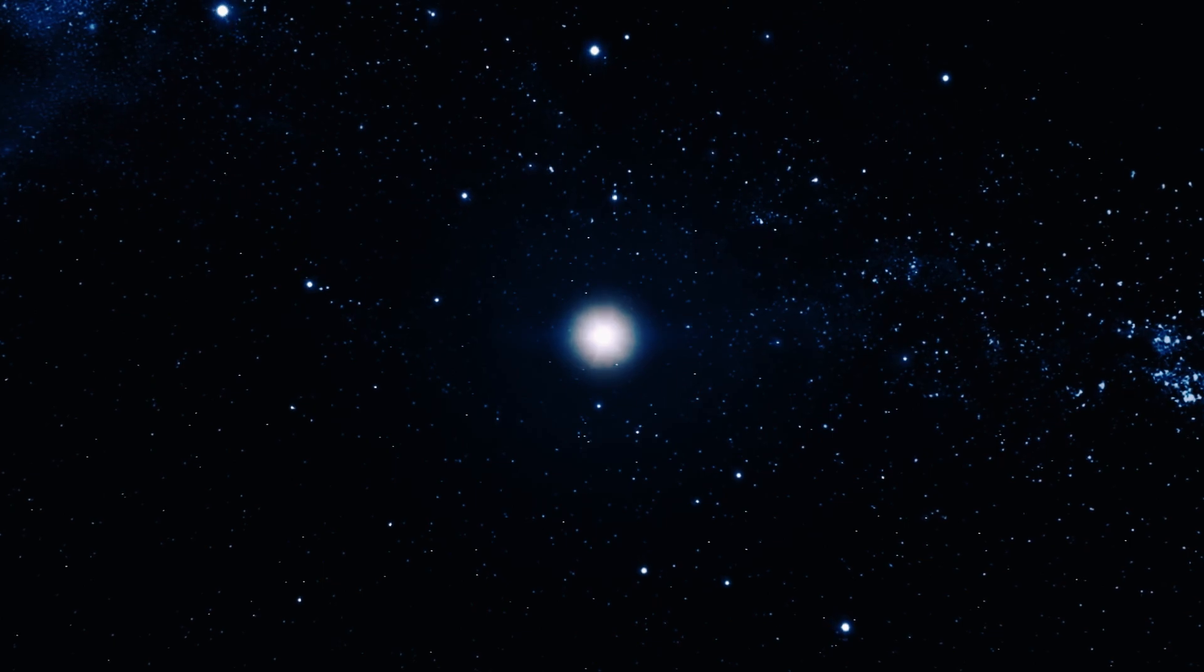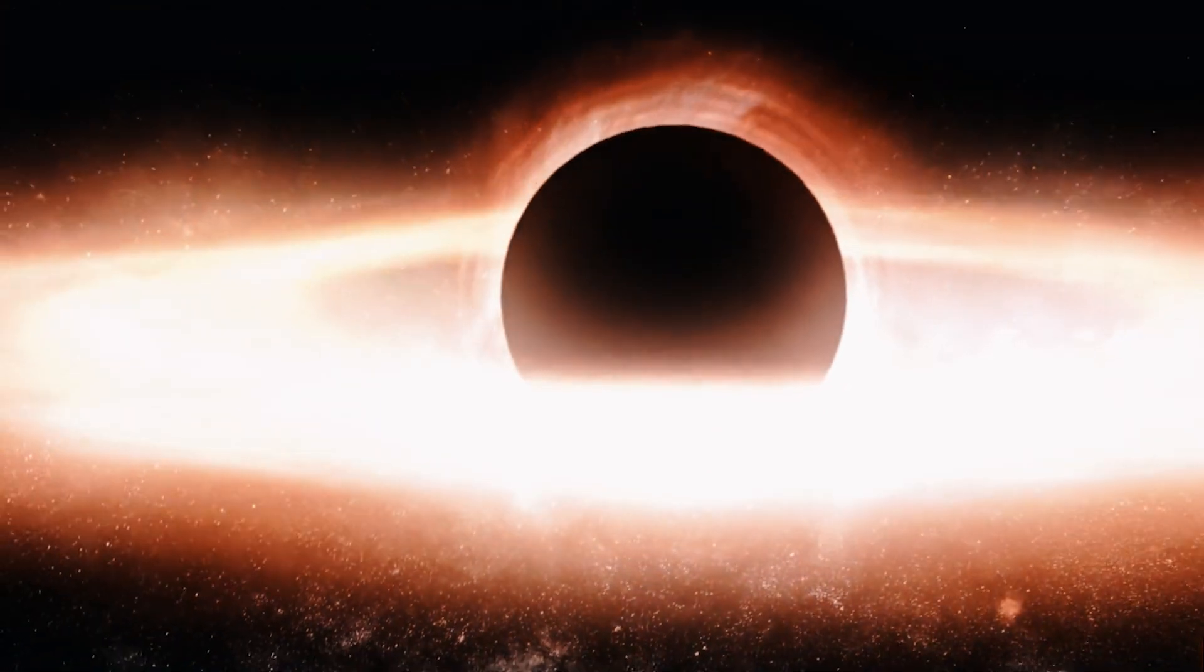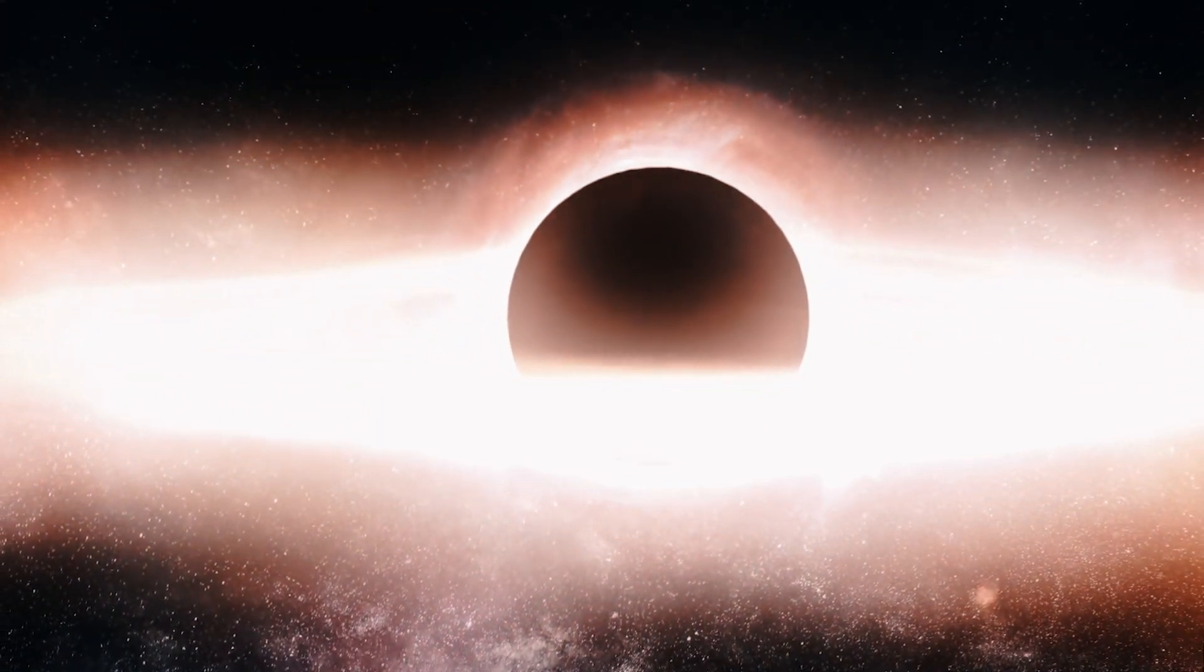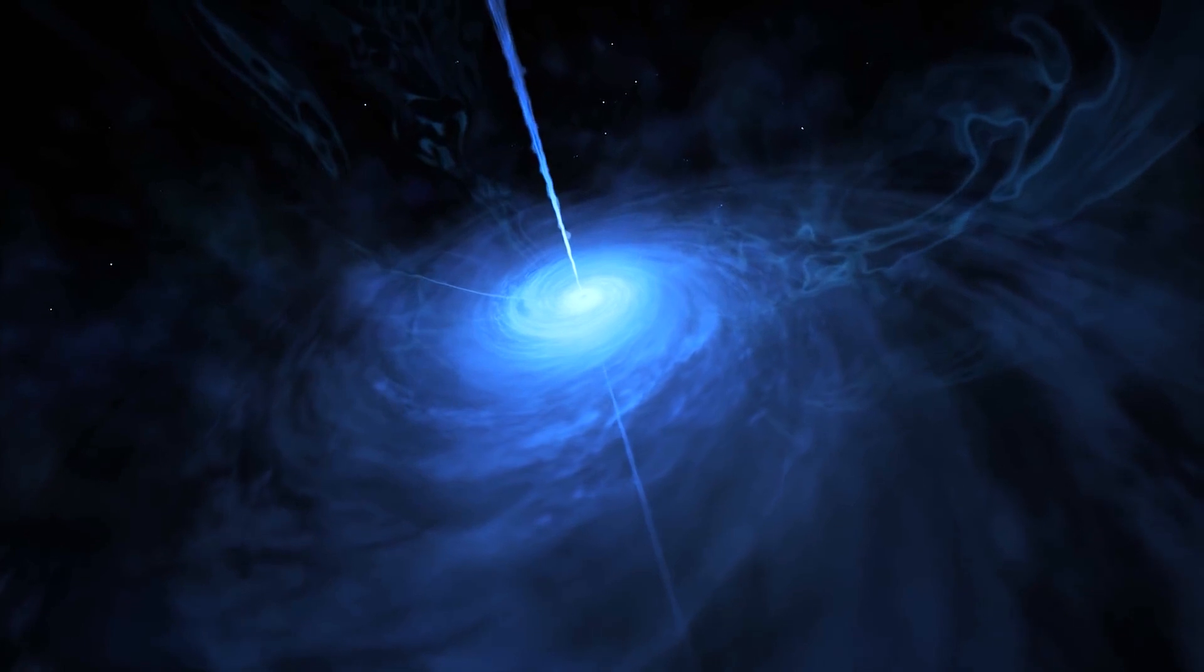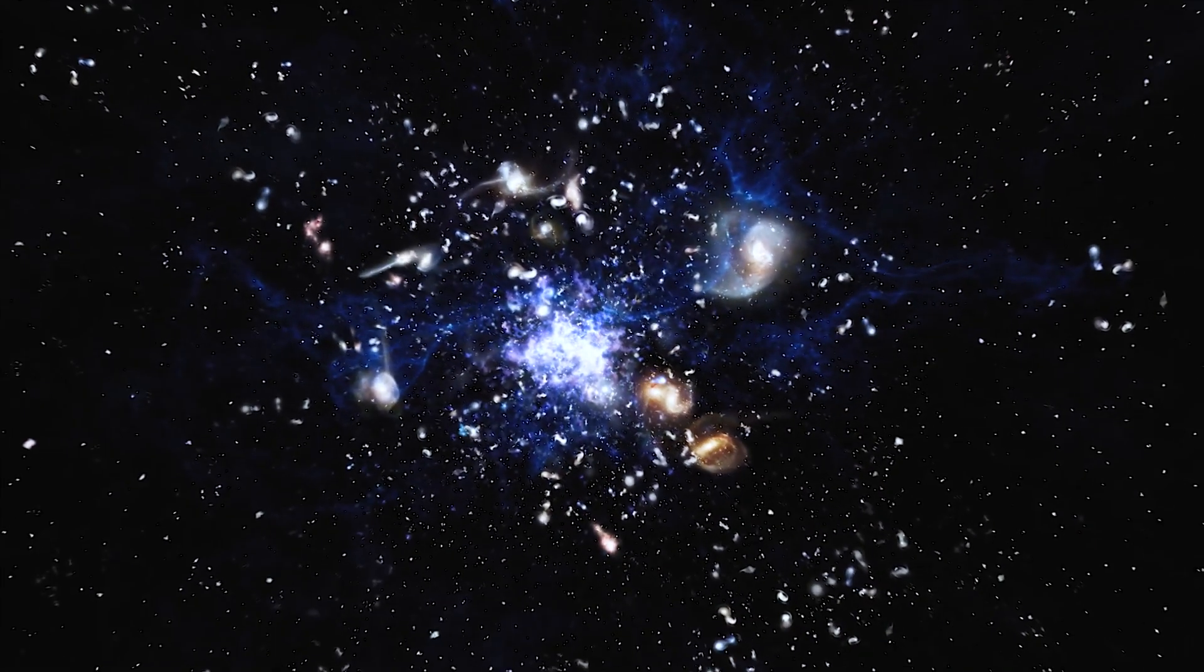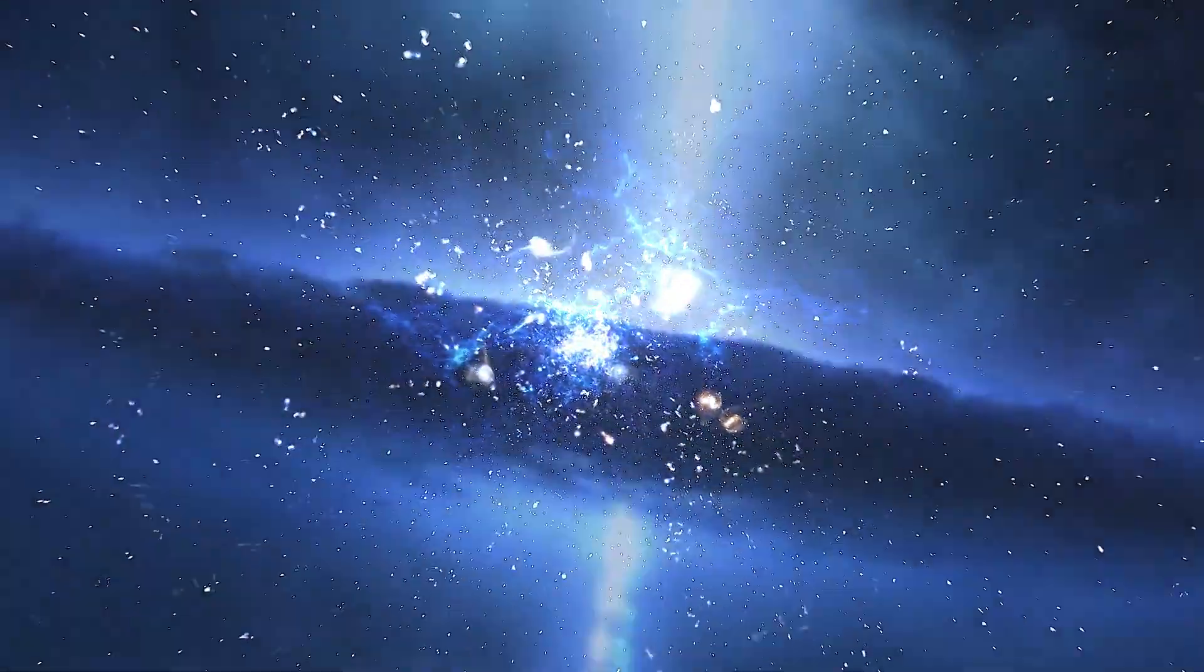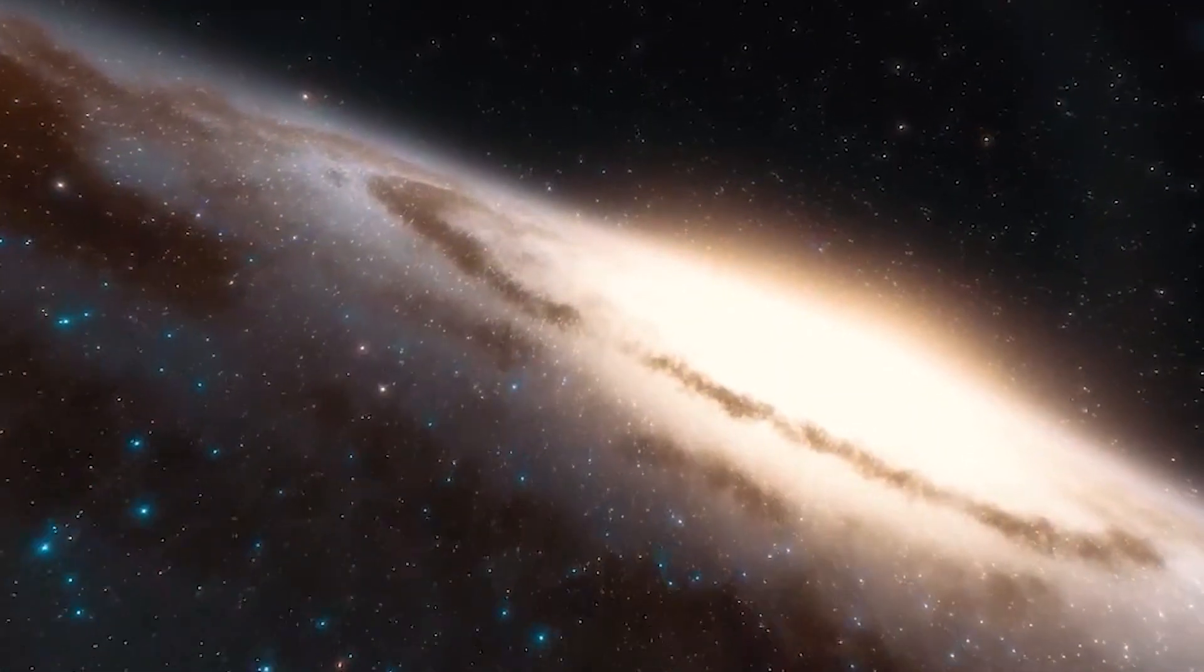One possibility is that supernova explosions of massive stars in the early universe formed stellar mass black holes. When our universe was one-third its current size, that black hole was still in its growth process. At some point, that black hole became very active and released a lot of energy to promote the formation of stars. When more stars were created, the universe became bigger. As the black hole grew, a galaxy was growing around it at the same time.